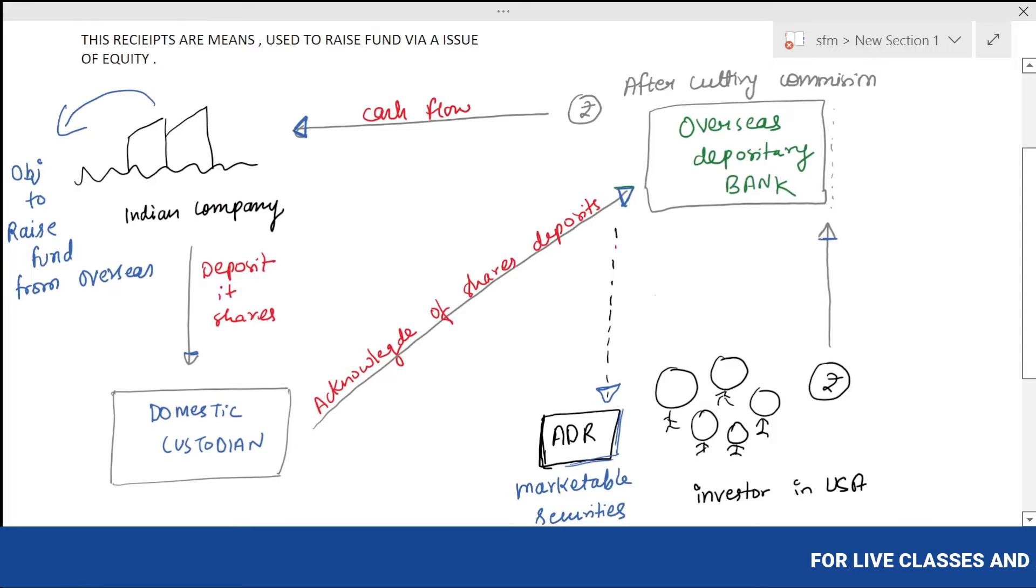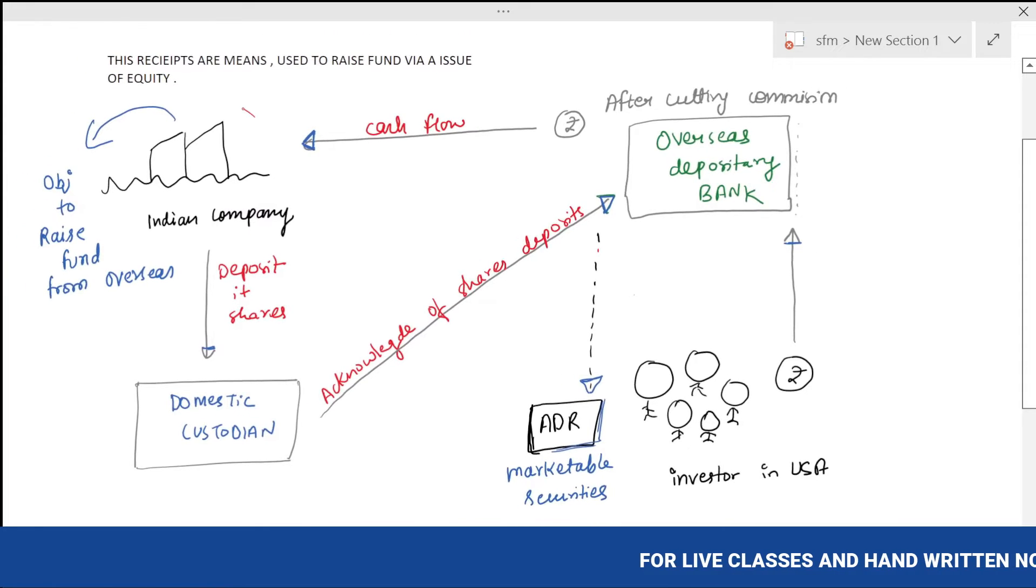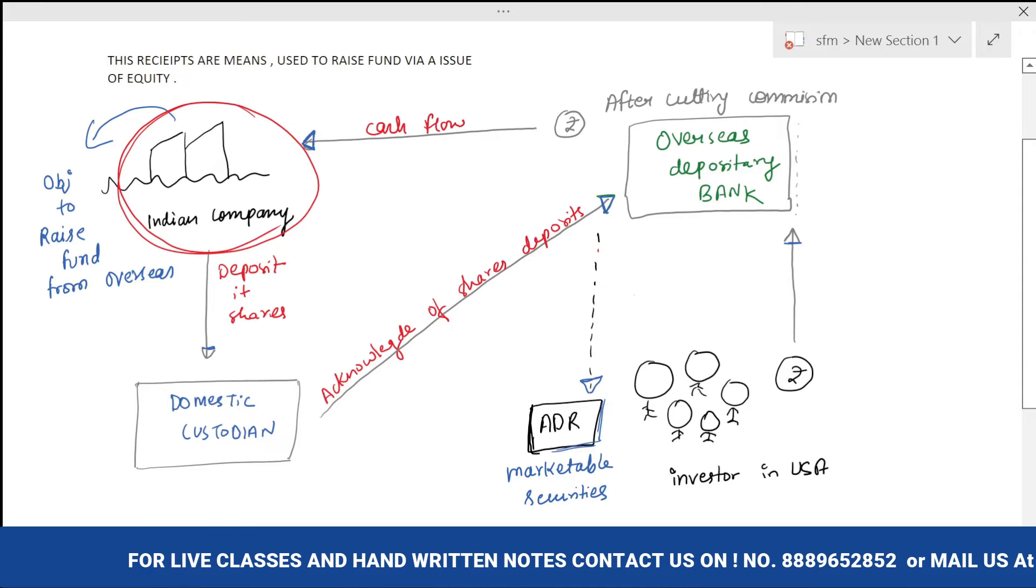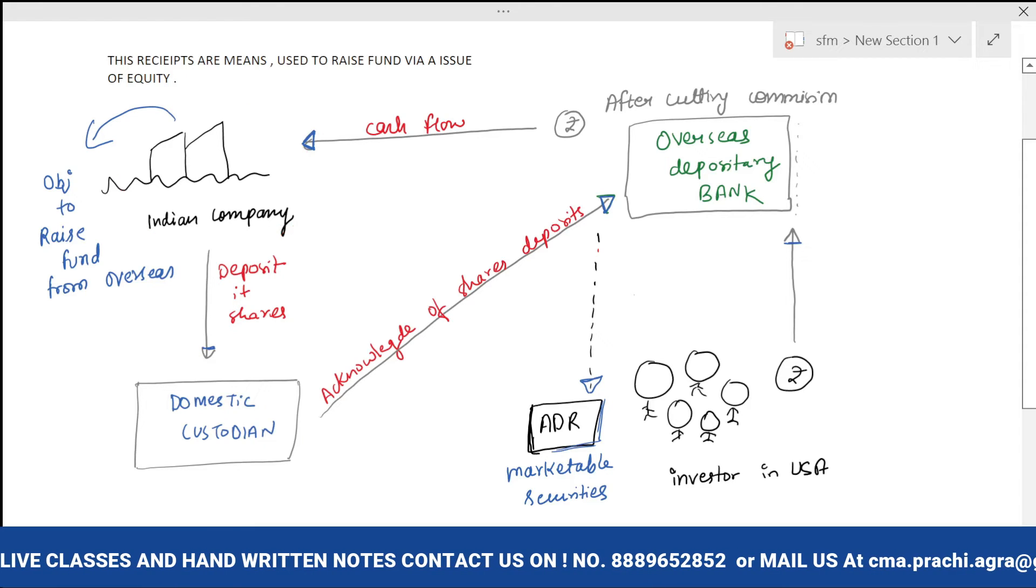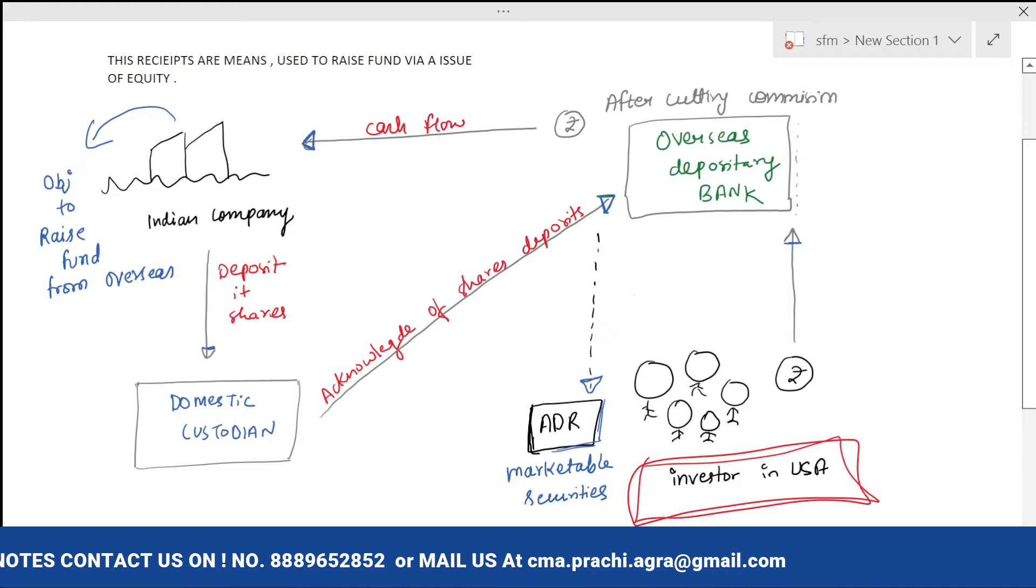First of all, if an Indian company wants to raise funds from overseas, that means the company wants money from foreign investors, like investors who belong to USA. So the company can deposit its shares to a domestic custodian.